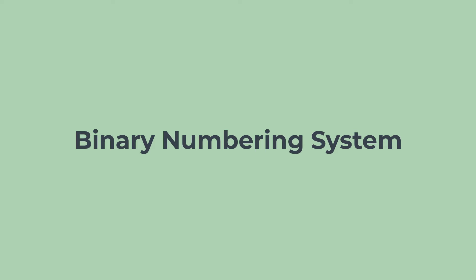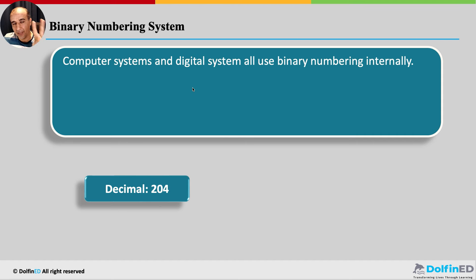Let's introduce the binary numbering system. We are all used to the decimal numbering system — 10 plus 10 is 20, 10 plus 5 is 15, 2 times 3 is 6. We deal with that day in, day out. So why do we need to learn another numbering system? IP addressing is related to it, and because everything inside our phones, computers, iPads, and laptops is all binary — all digital, and all binary.